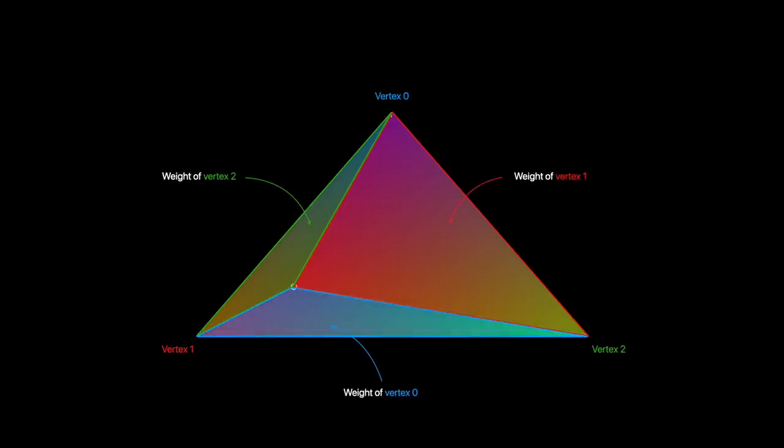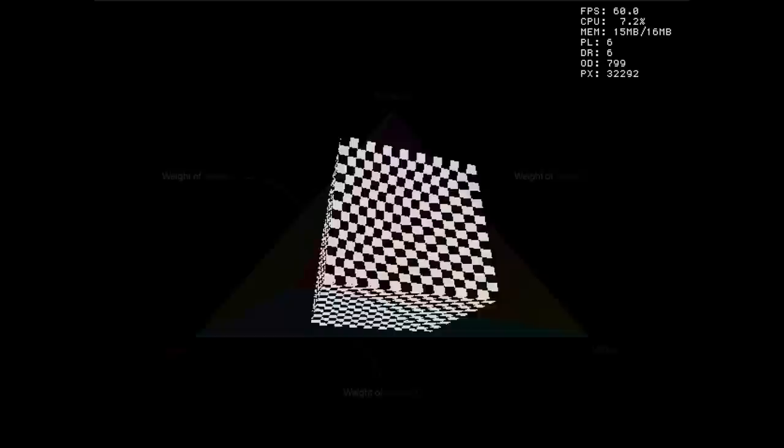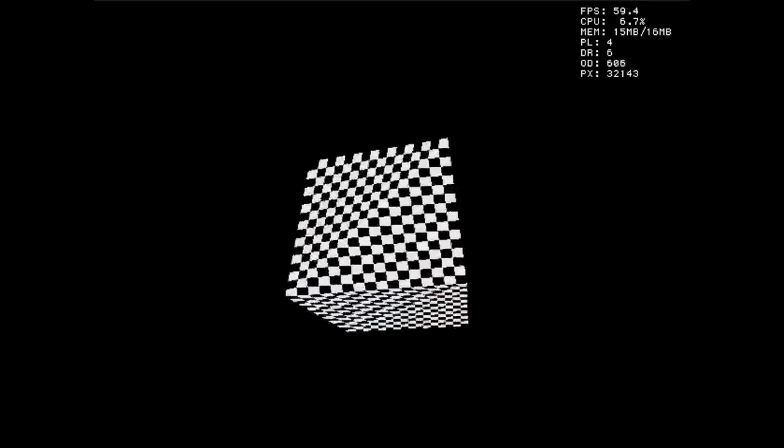As you can see, the closer the pixel gets to the vertex, the bigger the sub-triangle gets, so it gets more weight. This is very intuitive and gives convincing results for many cases. But in reality, it is simply not correct for interpolating a 3D polygon. If we interpolate texture coordinates this way, we get something like this — and if this weird texture mapping looks like something you've seen in a PlayStation game, you would be right.